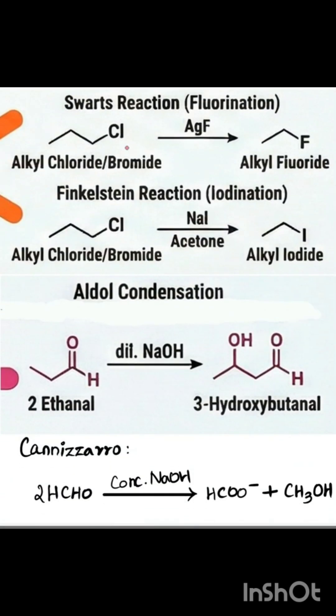The next category is Swarts and Finkelstein reactions. Swarts reaction forms the fluorinated product, and Finkelstein forms the iodinated product, both from alkyl halides. In Swarts, we use metal fluorides with dry acetone. In Finkelstein, we use NaI with acetone.